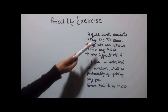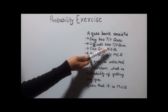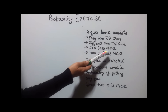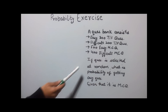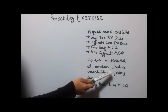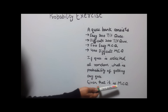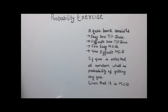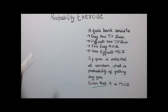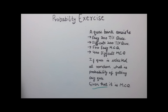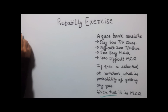Let's solve another example. A question bank consists of 300 easy true-false questions, 200 difficult true-false questions, 500 easy multiple choice questions, and 400 difficult multiple choice questions. If a question is selected at random, what is the probability of getting an easy question given that it is a multiple choice question? The phrase 'given that' indicates this is a conditional probability question. To simplify, let's convert this data into table form.